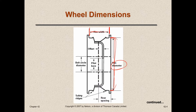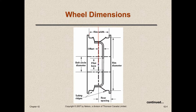That's the rim width. And the offset — if we took the rim and cut it in half all the way down the middle like that, and then we connect it, we see where we connect the wheel to the vehicle. This is the offset — this little difference right in here. It can either be positive offset or negative offset.